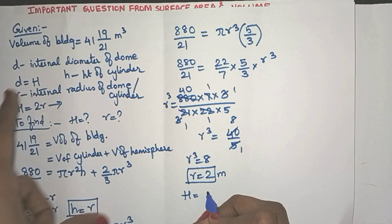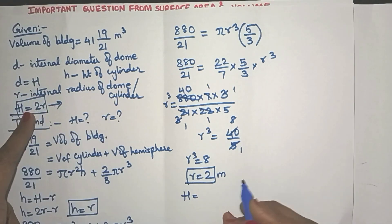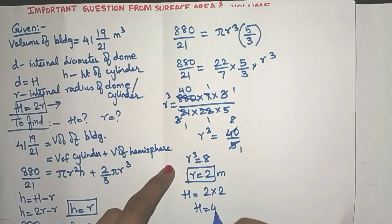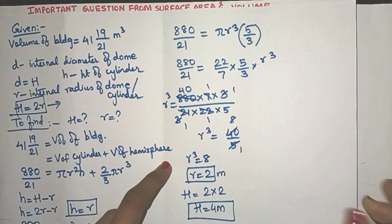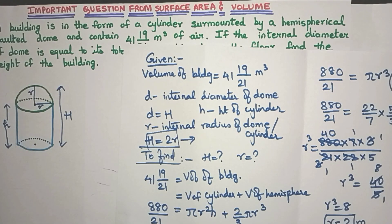So H will be what is it? 2R. Did you see that? So H is 2 into 2 which is 4 meters. So the height of this entire building is going to be 4 meters.